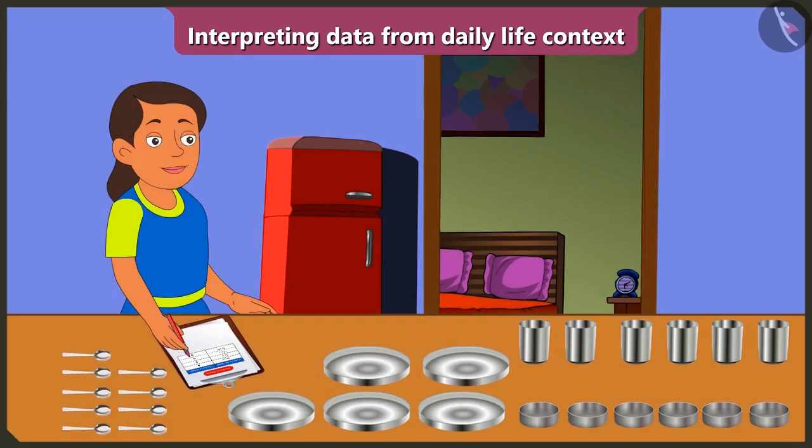I have interpreted the data about the number of utensils from this table. Now let's see the second example.